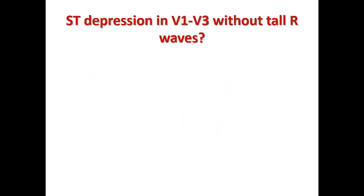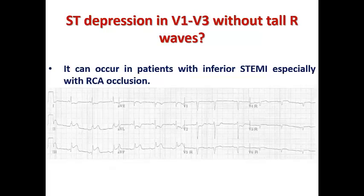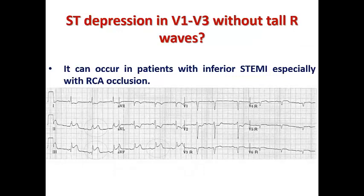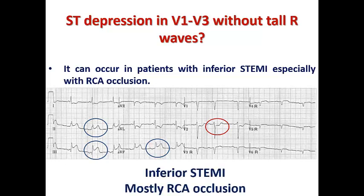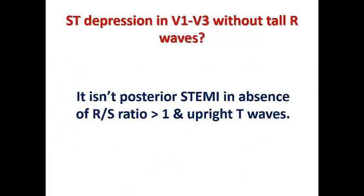An important question: when I see ST depression in V1 to V3 without a tall R-wave, is it posterior STEMI? This change can occur in patients with inferior STEMI, especially with RCA occlusion. For example, a patient may have inferior STEMI with ST depression in V2 and isoelectric ST in V1. As discussed in the lecture on culprit in inferior STEMI, this is most probably inferior STEMI with RCA occlusion, not posterior STEMI. When a patient has ST depression in the right precordial leads without RS ratio greater than one or upright T-wave, it is not posterior STEMI.